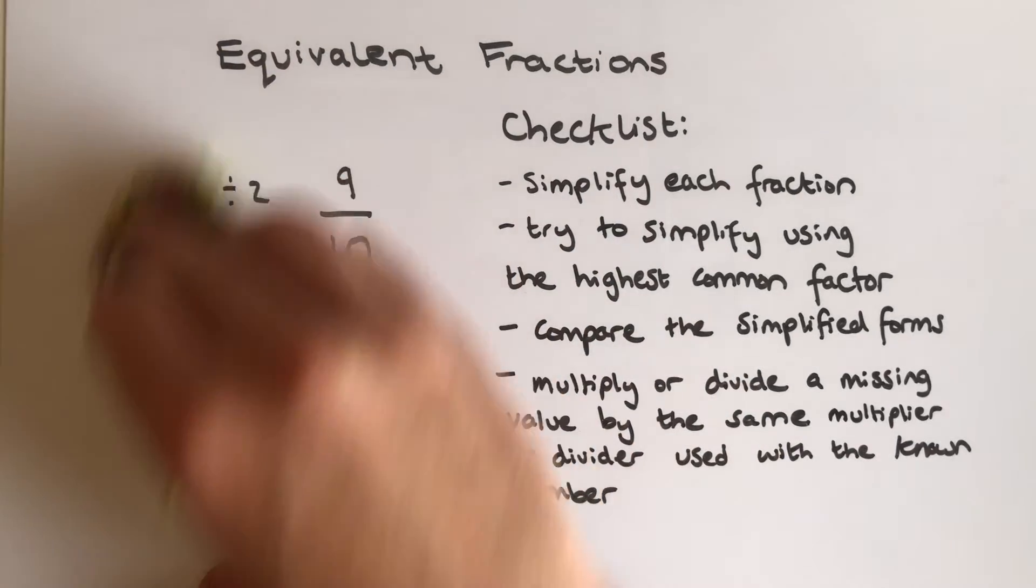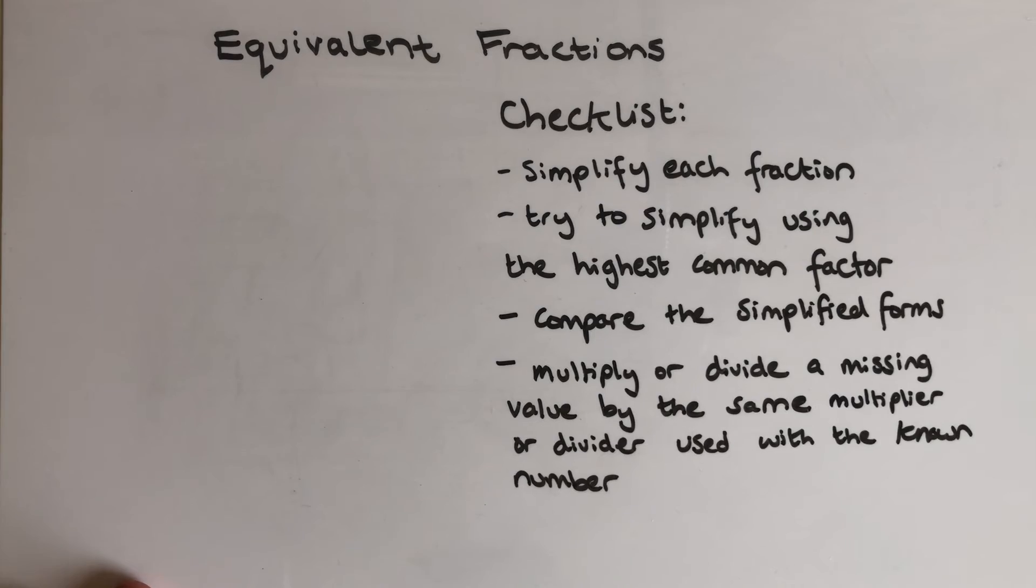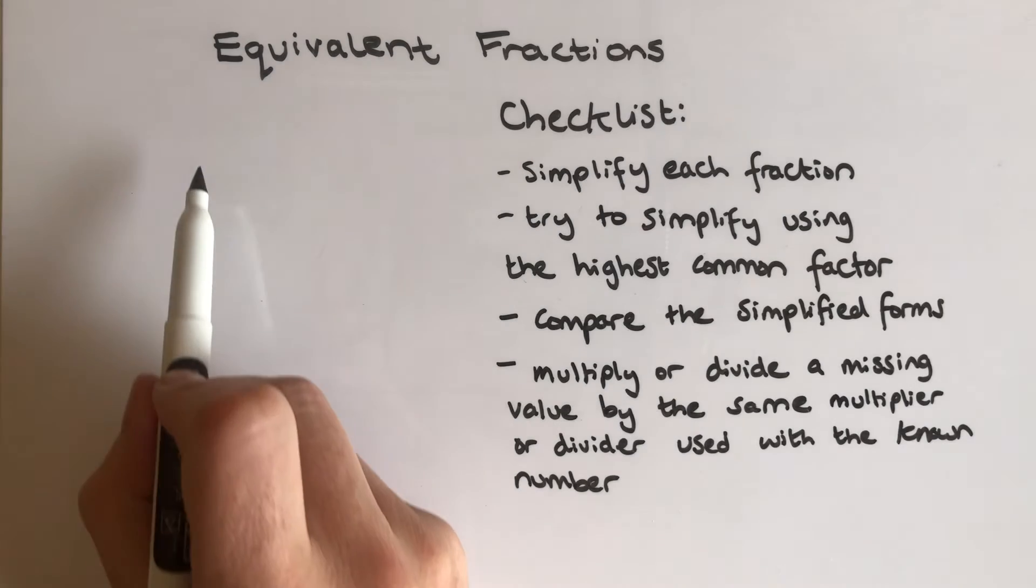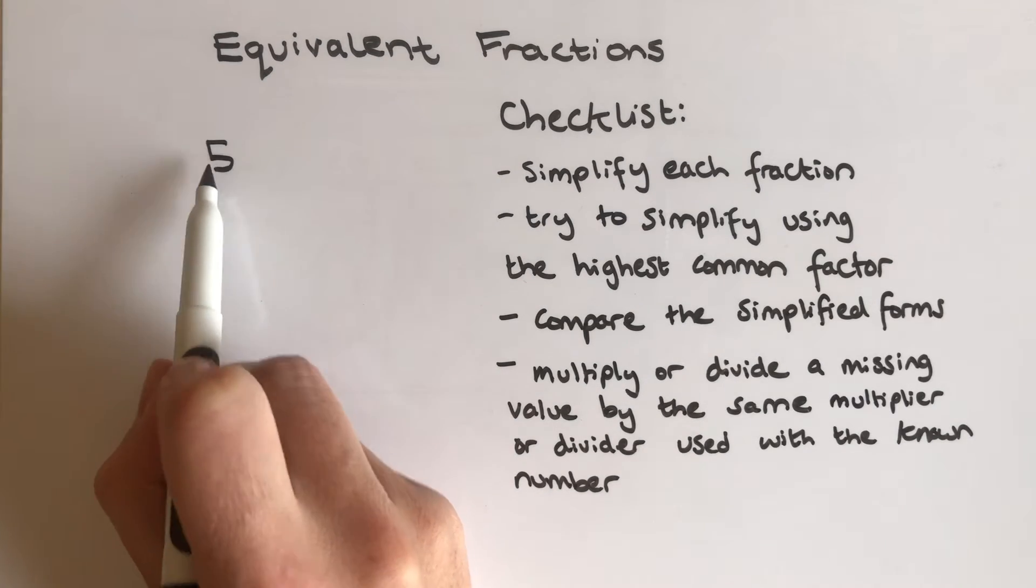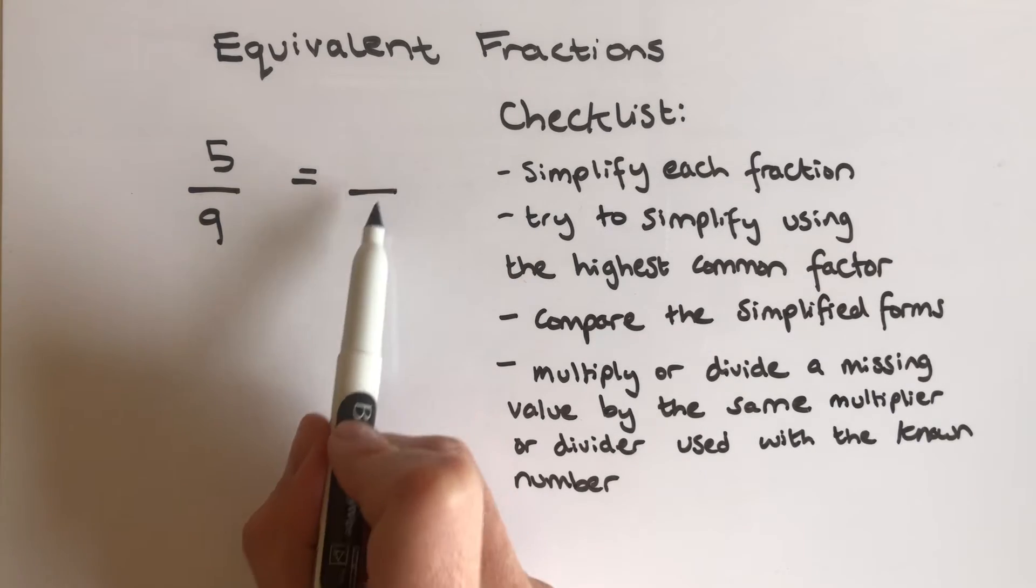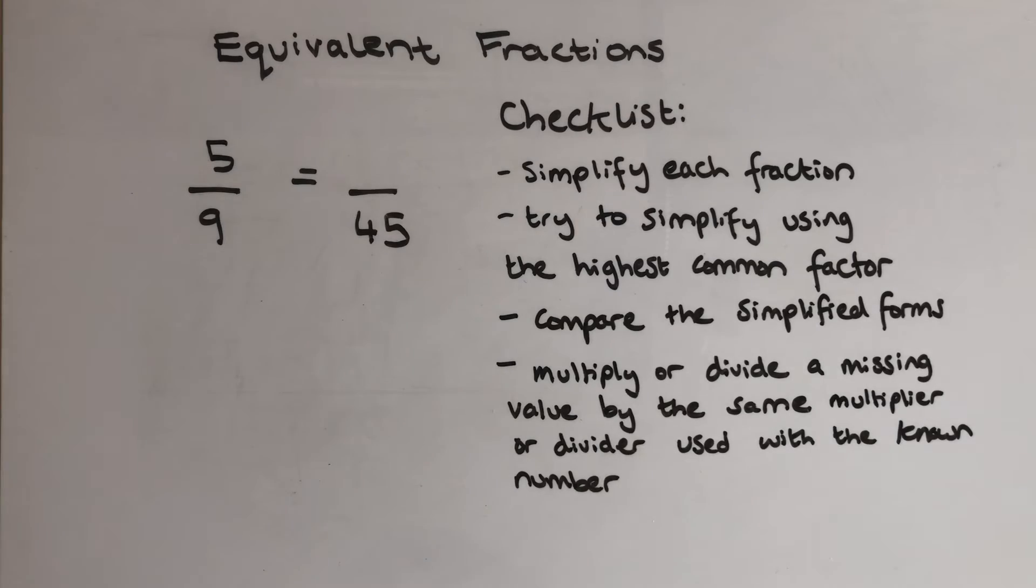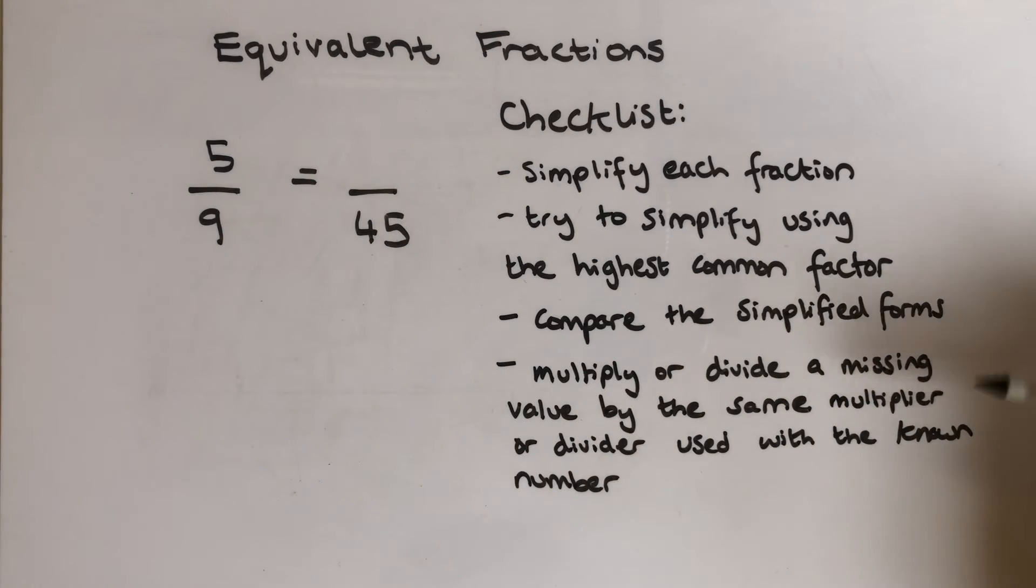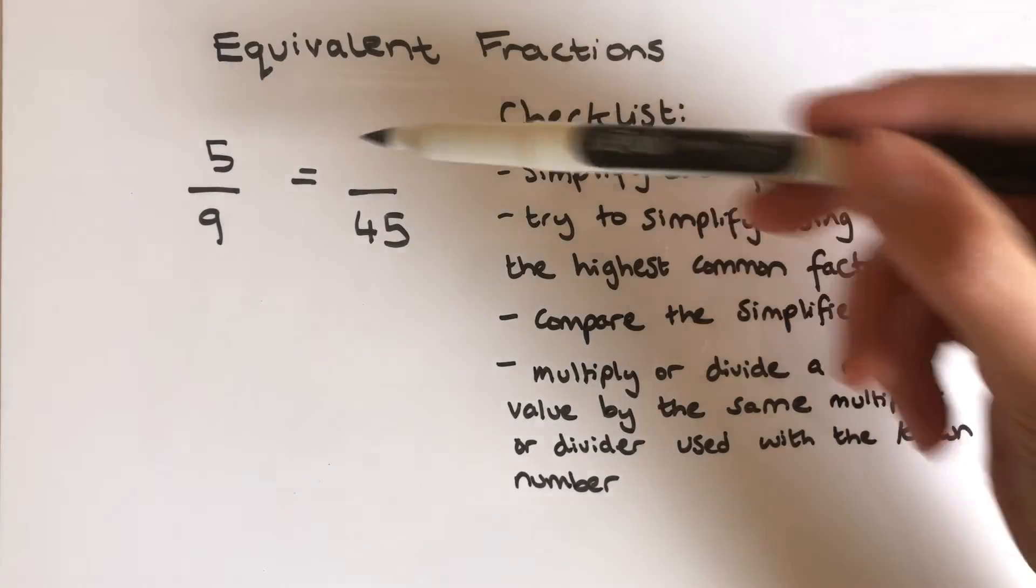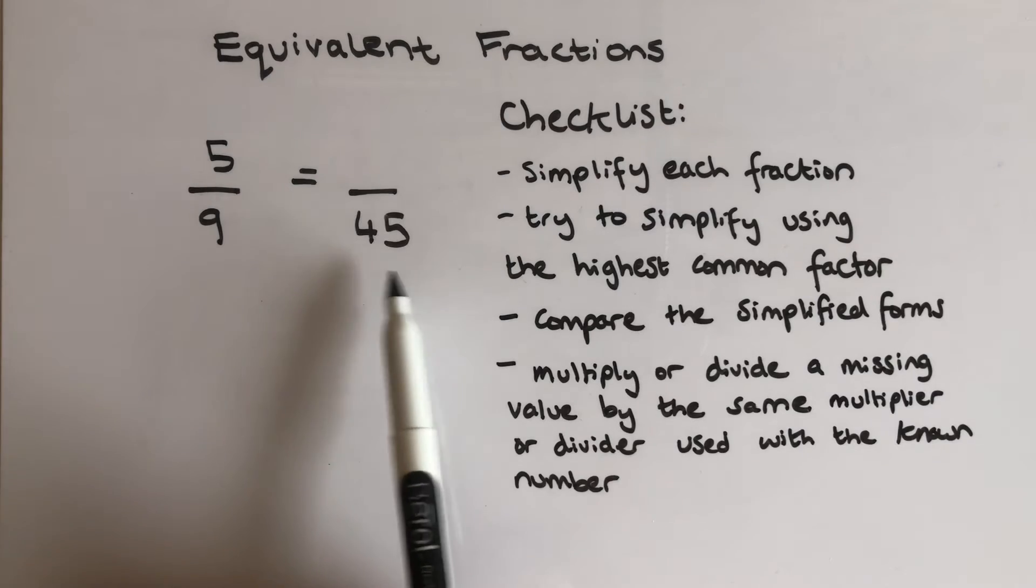Now sometimes you're given a fraction and you are asked to find the missing value. So for example, 5 over 9 is the same as something over 45. So I know they're definitely going to be equivalent fractions. It says I need to multiply or divide a missing value, this here, by the same multiplier or divider, which would be used with the known number.